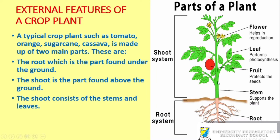The shoot system carries the flower, the leaf, and the fruits. The shoot system consists of the stems and the leaves. The main upright part is the stem, and any part branching off from it is called the branch. The root is also an organ, the leaf is an organ, and the flower is also an organ in the plant — they all have different uses.